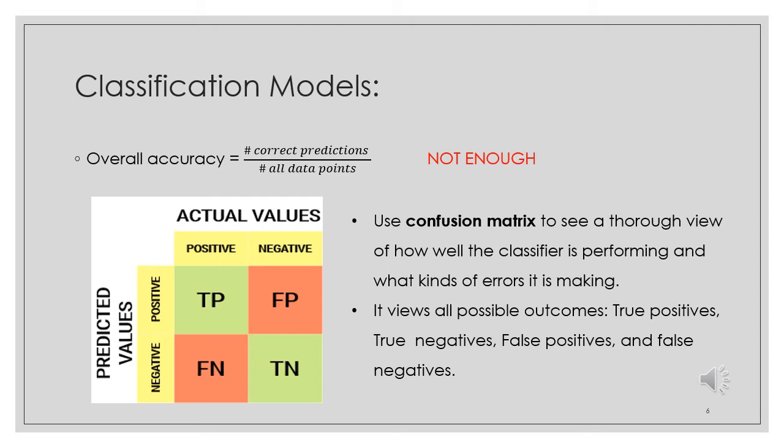True positive is when the predicted value matches the actual value which is positive. True negative is when the predicted value matches the actual value too, but the value is negative in this case. False positive is when the predicted value was positive, but the actual value is negative. And the false negative is when the predicted value was negative, but the actual value was positive.